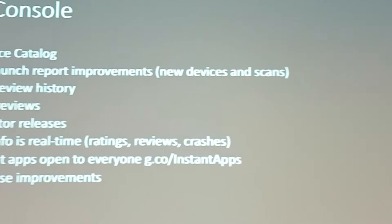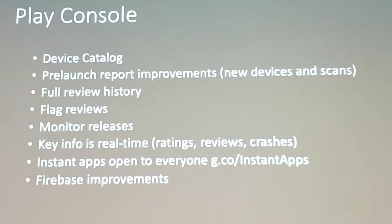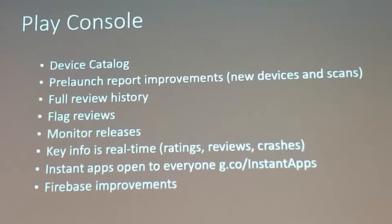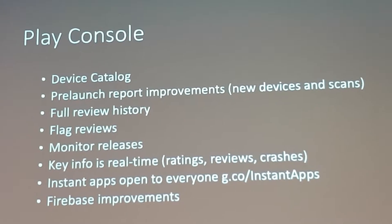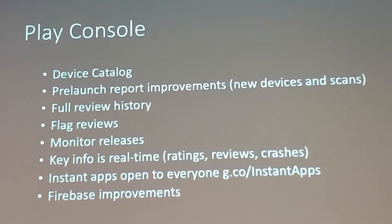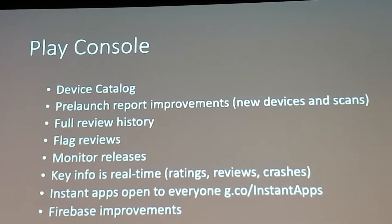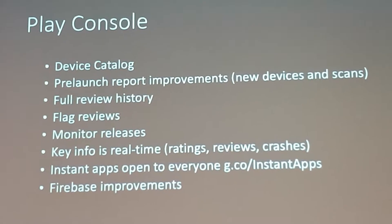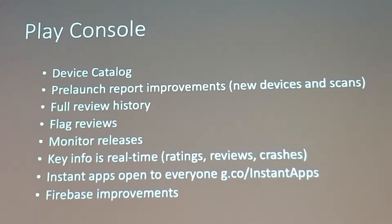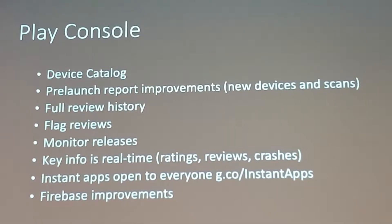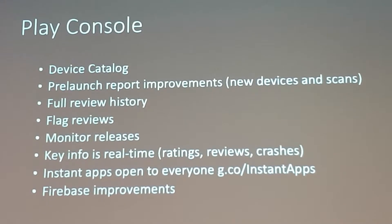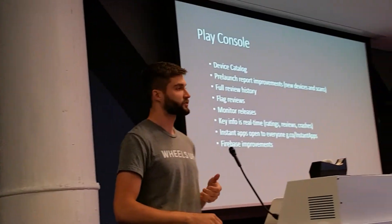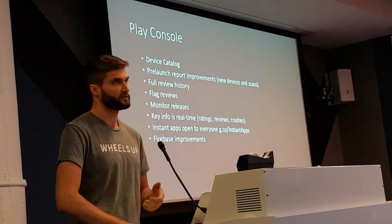Device catalog: in the past, if you had to exclude, say, a Samsung Galaxy S7 from your APK, you'd quickly realize there are about ten different versions for all the different system-on-chips. So now they totally revamped the catalog. Pre-launch report improvements: if you submit your APK for a pre-launch report, they added new security scans and new devices — the pre-launch report will actually run on an Android O beta device now.